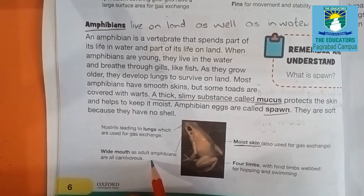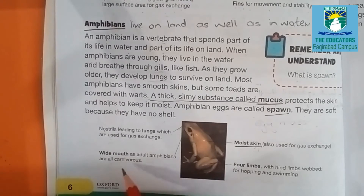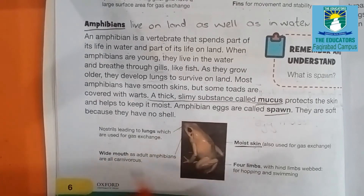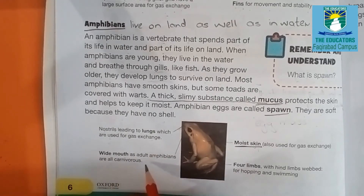Adult amphibians are all carnivores. Carnivores are flesh-eating animals, while herbivores are plant-eating animals. The wide mouth helps them to eat, and adult amphibians can eat insects.